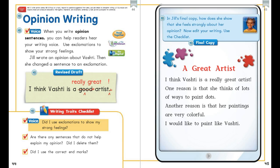This is a first grader named Jill, and she wrote this. This is part of her draft, and then we'll look at her final copy on the next page. She wrote her opinion about Vashti, and then she decided to change a sentence to an exclamation. She wanted to show strong feeling. Her sentence was 'I think Vashti is a good artist,' and she changed that to read, 'I think Vashti is a really great artist!' with an exclamation. This shows that Jill has a strong feeling about Vashti and how great of an artist she is.